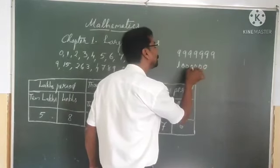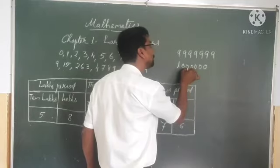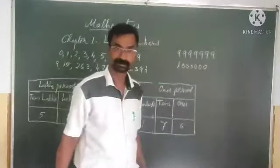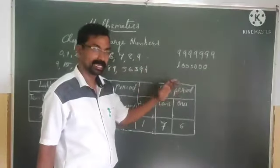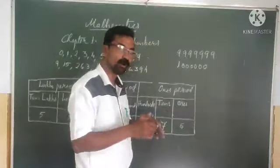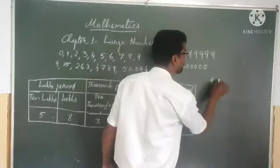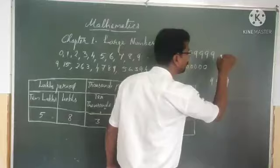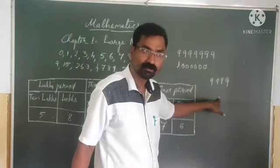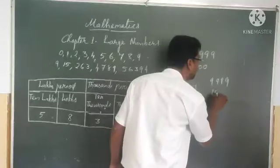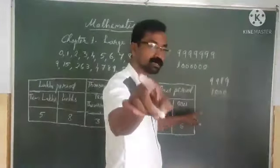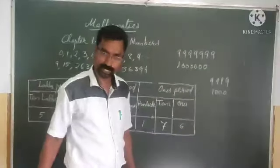So if you want to make largest four digit number, four nines: read as 9,999. Smallest four digit number: 1,000. Understood?